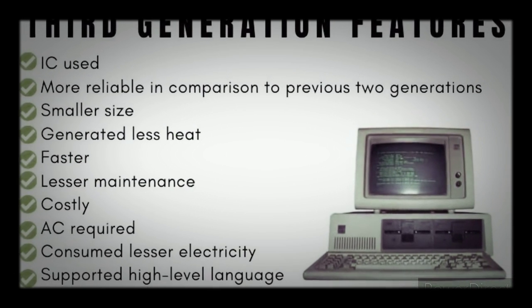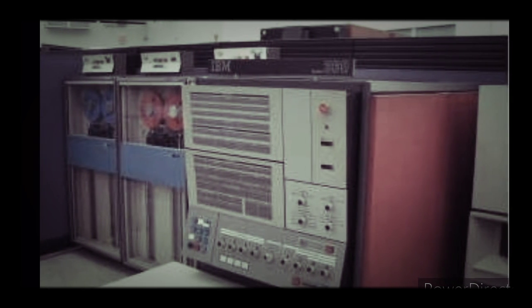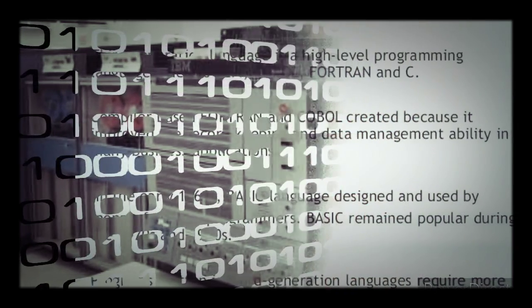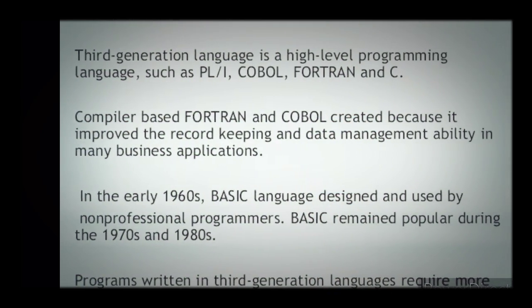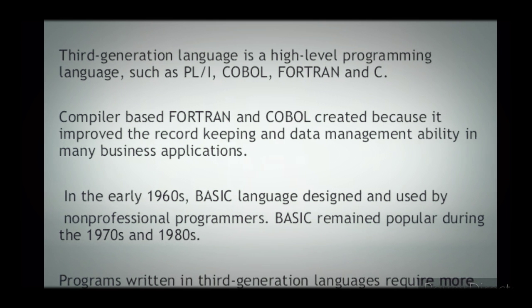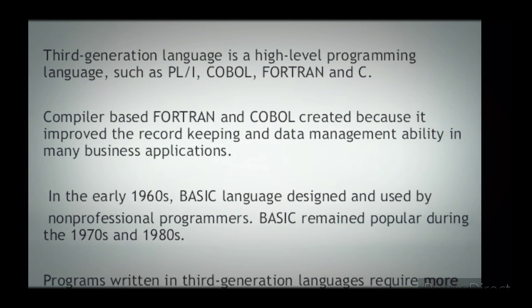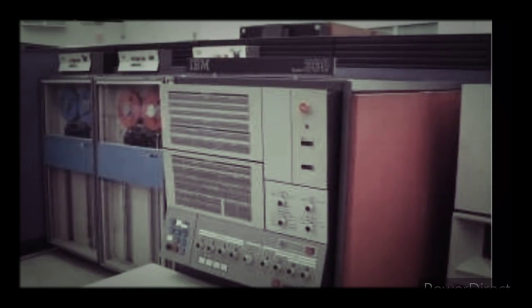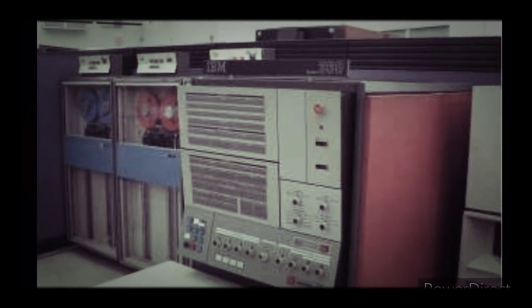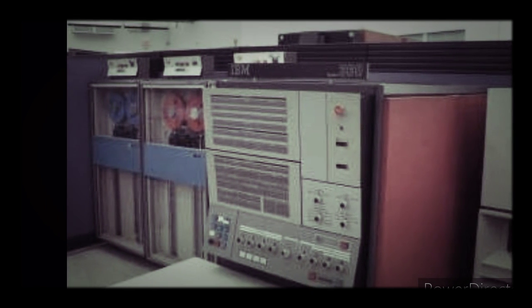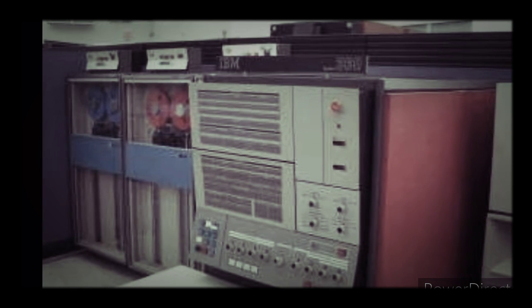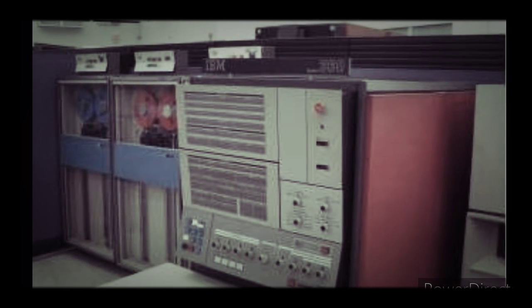The most important machine of the third generation was the IBM 360 series, which cost IBM $5 billion to develop. High-level languages such as Fortran, BASIC, COBOL, etc. were used. It was designed to manage high-speed data processing for scientific uses like global weather forecasting, theoretical astronomy, and space physics.